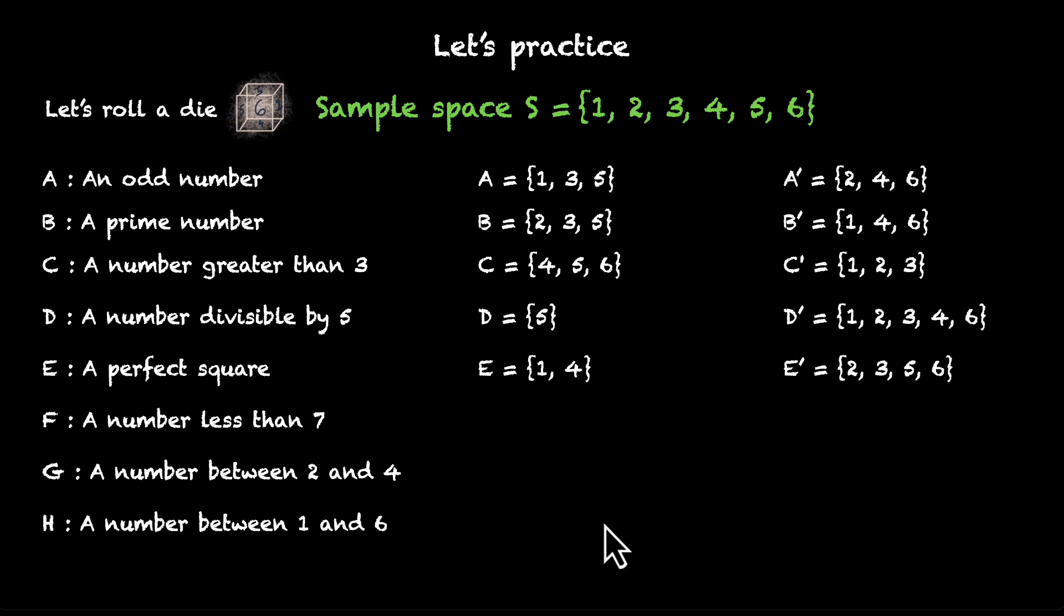A number less than 7. That's interesting. So, all of these numbers are less than 7. So, this event F will have all the sample points from the sample space: 1, 2, 3, 4, 5, and 6. What will its complement have? Well, its complement is going to have nothing. Because we're going to get rid of all 6 of these sample points. And the way you write it in sets, you'll use a different symbol. You'll use the symbol phi.